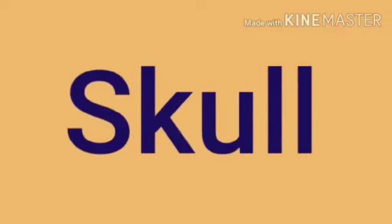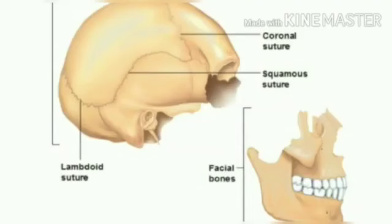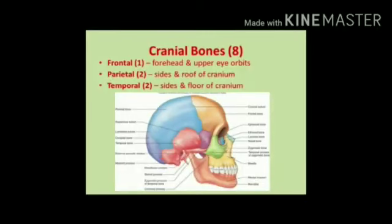The next part we are going to study is the skull. Our skull is also made up of bones. The skull consists of two parts: the head and the face. The head is the upper part of the skull and the face is the lower part. The head is made up of eight bones which form the brain box that protects the brain.